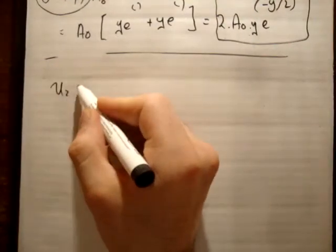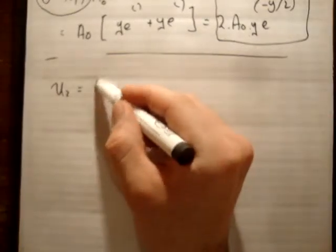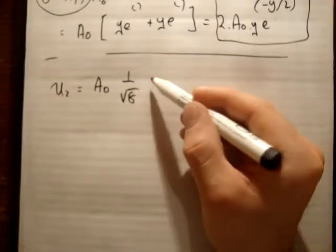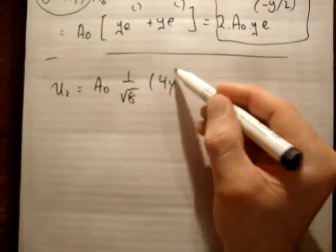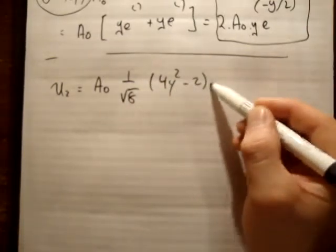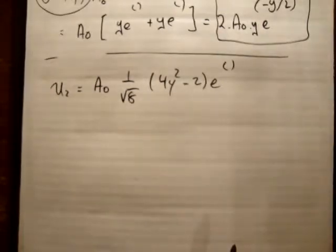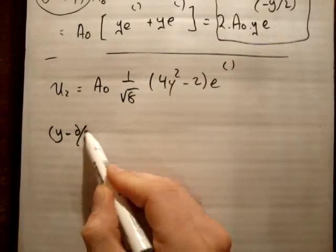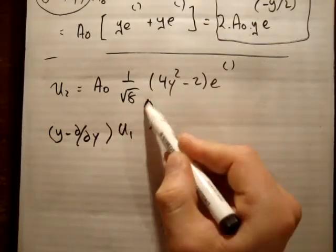Similarly, we know that U2, as I said, was equal to... Now, if we want to write it in the form of our Hermite polynomials, it looks like this: 4Y squared minus 2, e to the minus Y squared over 2, like that. Okay? That means if we apply our Y minus DDY operator onto U1, we should get this.